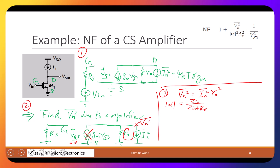RS is 50 ohms but there's no current going through it — why? Because Zin for an open circuit is infinity. This is a bit contradictory for RF, but we're assuming frequency is still low enough that the gate impedance is approximately infinite, so alpha is approximately equal to 1.